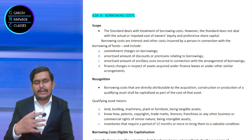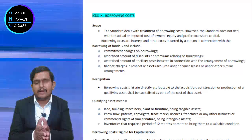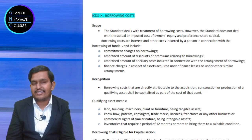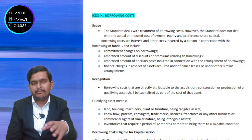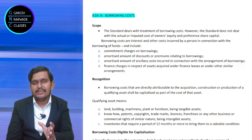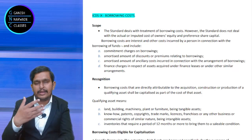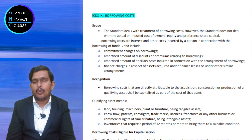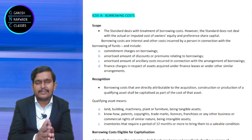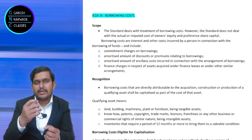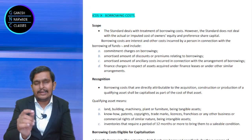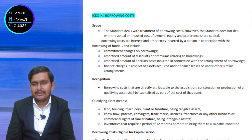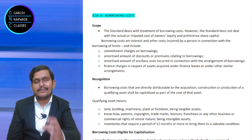Inventory which takes more than 12 months to make is also a qualifying asset. For example, Indian companies making Tejas aircraft — manufacturing such an aircraft takes more than one year, and for a company making aircraft only for the government, it is inventory. If inventory takes more than 12 months to prepare, it is a qualifying asset. For acquiring, constructing, or manufacturing such qualifying assets, any loan taken — whatever interest is on that — should be capitalized.